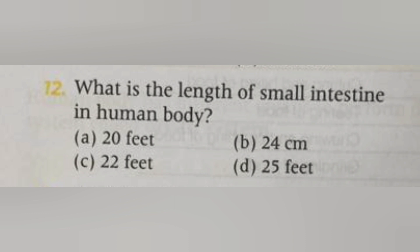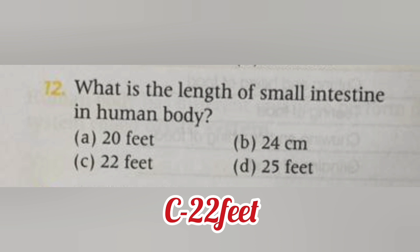Next, what is the length of the small intestine in the human body? A. 20 feet, B. 24 cm, C. 22 feet, D. 25 feet. The answer is C, 22 feet.